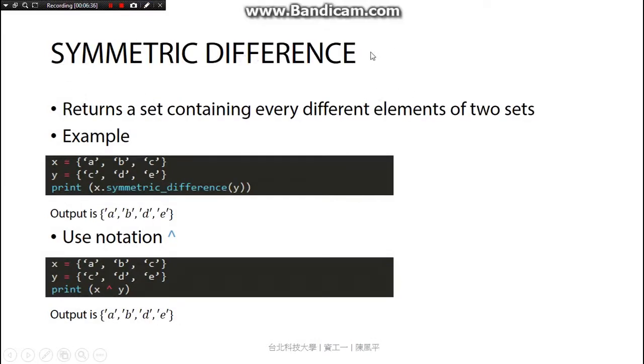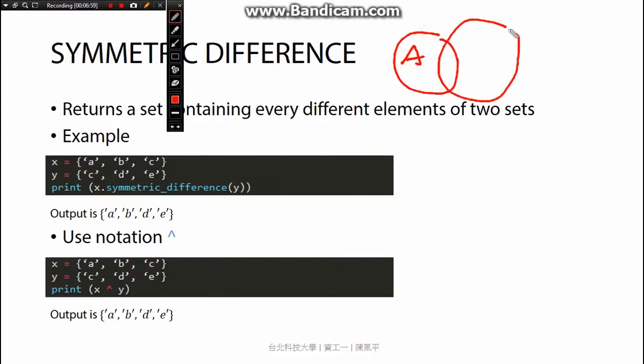The symmetric difference - so it seems very strange, so I will again draw it for you guys to understand. It returns a set containing every different element of two sets. For example, we have set a and set b again. So it returns a set containing every different element of two sets - this is like every different element of two sets. So it's just like the union of a and b but not the intersection of a and b like this.